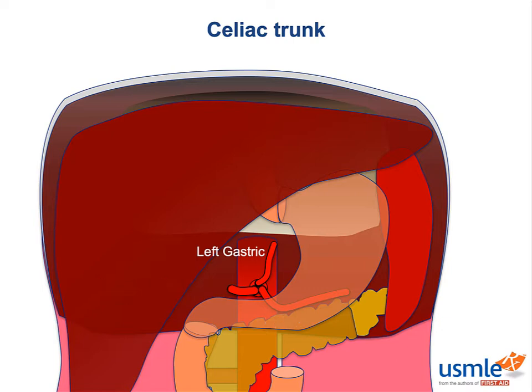The left gastric artery is the simplest. It gives off a small branch to the lower esophagus that ascends into the thorax via the esophageal hiatus, but the main portion enters the gastro-hepatic ligament to become part of the arterial anastomosis on the lesser curvature of the stomach.